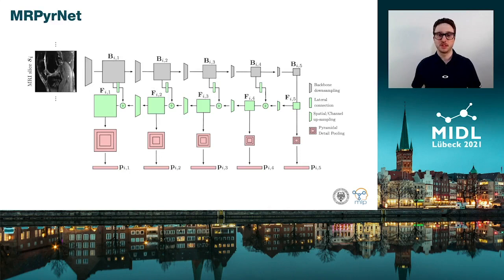For this motivation, our contribution is a new convolutional architecture called MRPIRNET, which is composed by a feature pyramid network and pyramid detailed pooling modules. Our proposed structure allows to exploit the anatomy of knee disorders without the need of additional annotations, only a label for the presence or absence of the disorder.